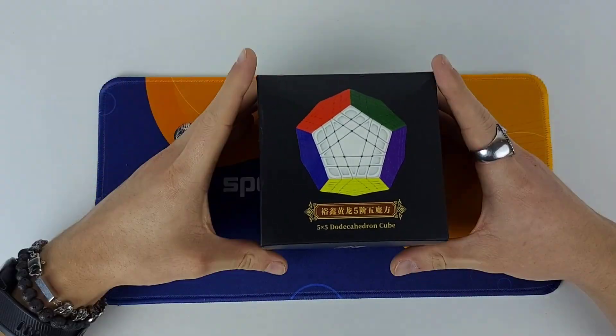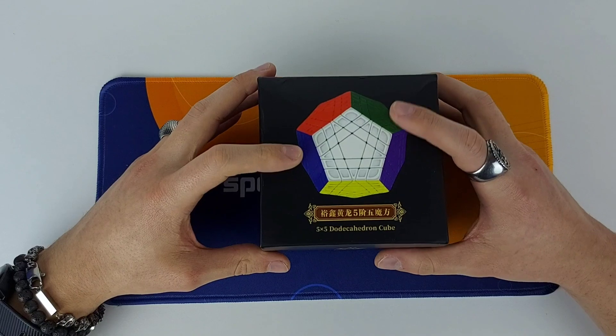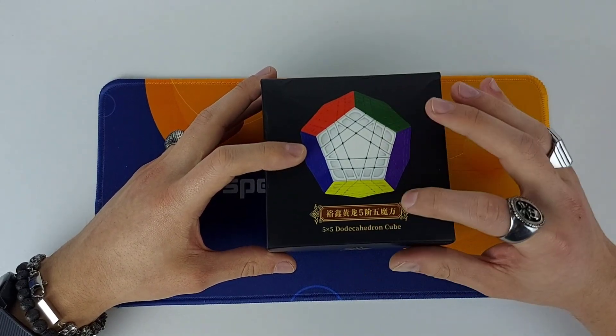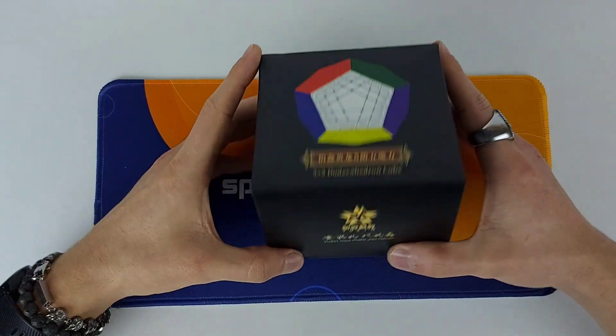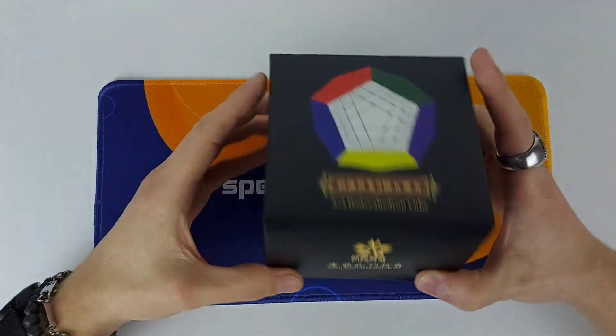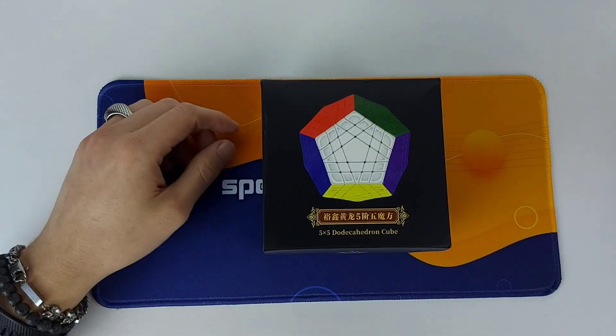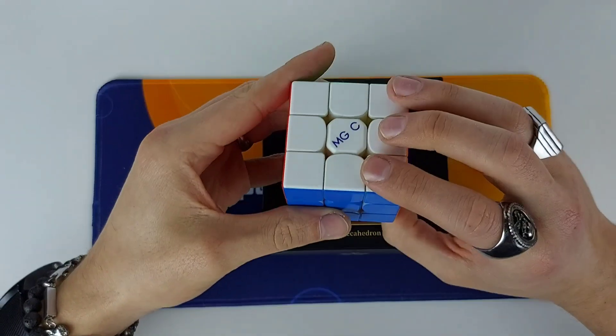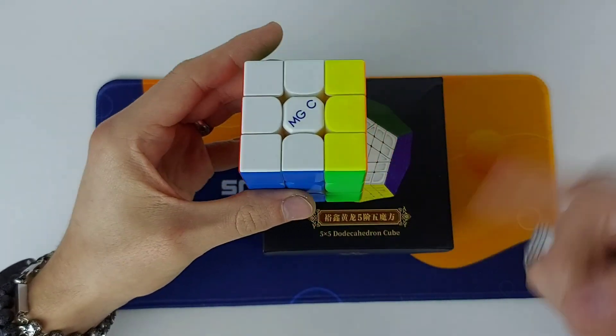Hey there Cubers, it's Belgian Speedcuber here and in this video I'm going to be unboxing the 5x5 Megaminx from Yushin. I'm guessing this is called the Gigaminx. I'm really excited to show you this one and I hope you guys are too. Roll the intro.